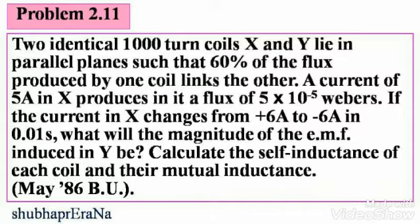Two identical 1000-turn coils, X and Y, lie in parallel planes such that 60% of the flux produced by one coil links the other. A current of 5 Amperes in X produces in it a flux of 5×10⁻⁵ Webers. If the current in X changes from +6 Amperes to −6 Amperes in 0.01 seconds, what will be the magnitude of the EMF induced in Y? Calculate the self-inductance of each coil and their mutual inductance.